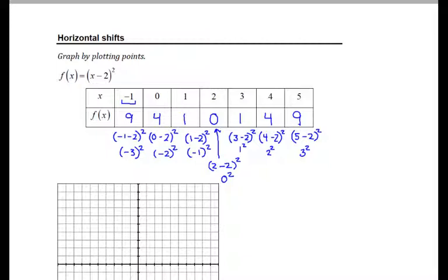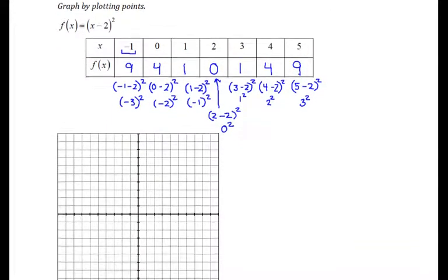So with everything filled in, we can see that we again have our 9, 4, 1, 0, 1, 4, 9 pattern in our y values that we saw with the first graph, y equals x squared. Let's go ahead and plot these points now.